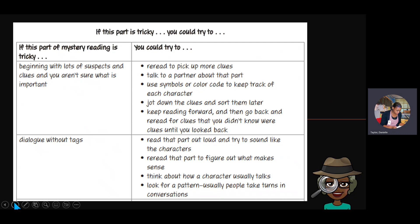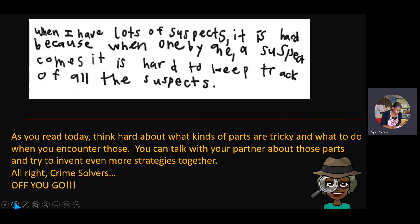Readers, this ended up being an incredible list — invented to address two really big challenges. You can try these out if you come across those sorts of tricky parts in your book. Earlier you thought about your own challenges in mystery reading — I hope you've already started thinking about strategies to deal with those. Remember, when you come across something tricky, you're not going to shrug it off — you're going to take action. Here's a response from another third grader, Sam: 'When I have lots of suspects it is hard, because when one by one a suspect comes, it is hard to keep track.' As you read today, think hard about what parts are tricky and what to do — talk with your partner and try to invent more strategies together.